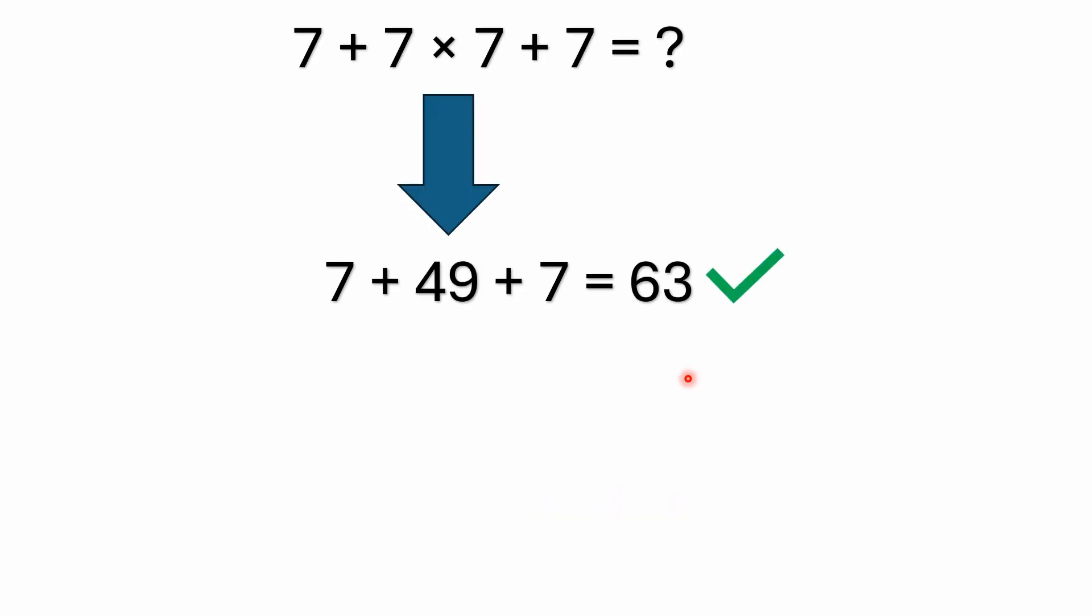All right, so if you remember your order of operations, you know that multiplication has precedence over addition. So the first operation that we have to solve is seven times seven, and seven times seven is 49. Seven plus 49 is 56, and 56 plus seven equals 63. So the correct answer to this problem is 63.